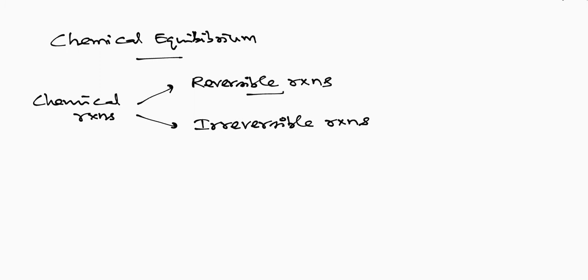What are reversible reactions? Suppose you take some reactants. These reactants, under a given set of conditions, react to give some products. Under the same set of conditions, if the products can also react and give back the reactants, then we call this type of reaction as a reversible reaction. Simply put, a reversible reaction will occur in both directions — in the forward direction as well as in the backward direction — under a given set of conditions.